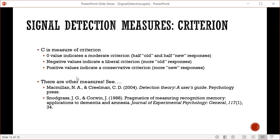Another measure is criterion. These have mathematical equations - check Macmillan and Creelman or Snodgrass and Corwin for how to calculate these values. There's also a package in R that calculates them from hits and false alarm rates. C is a common measure of criterion. A zero value indicates a moderate criterion where people split old and new responses half and half. Negative values indicate a liberal criterion with more old responses overall. Positive values indicate a conservative criterion with more new responses overall.